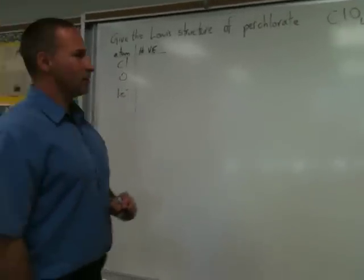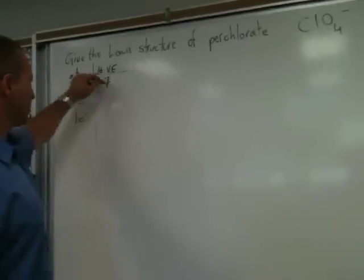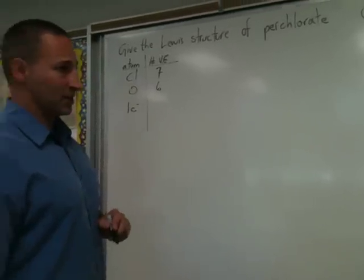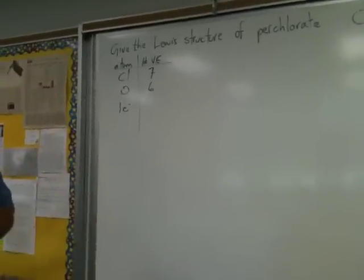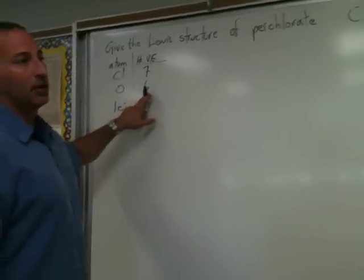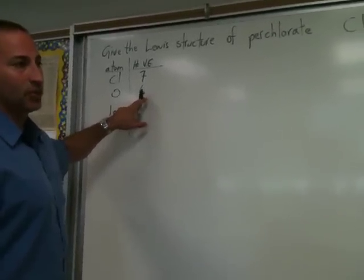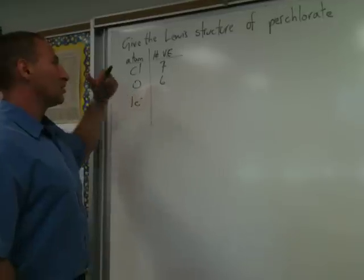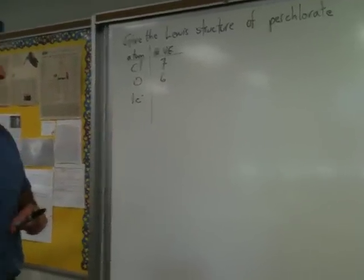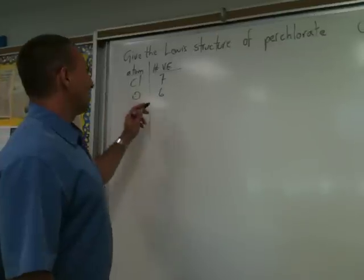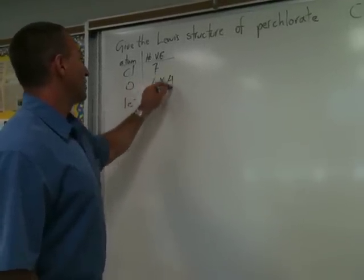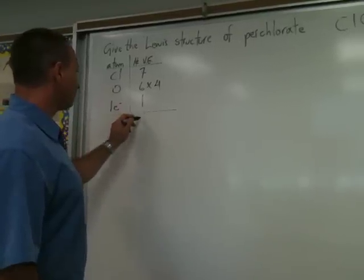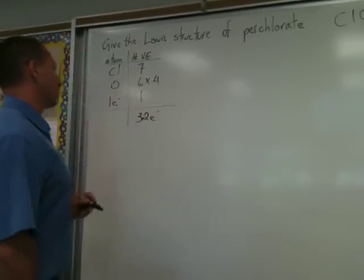Chlorine is a halogen and has seven valence electrons. Oxygen has six because it's a chalcogen — it's in group 16. The way you can tell the number of valence electrons in an atom is by taking the second number in the group to which it belongs. So if it's group 17, like a halogen, it's got seven valence electrons. If it's in group 16, like oxygen, it has six. Then there's one extra electron for the negative charge. There are four oxygen atoms, so 24 plus 8 gives you 32 electrons to account for in the structure.